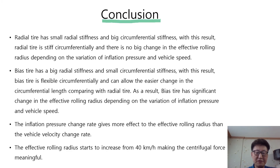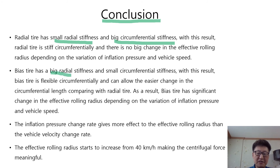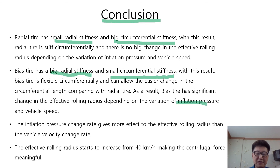Here is the conclusion for this video. Radial tire has small radial stiffness and big circumferential stiffness. With this result, radial tire is stiff circumferentially and there is no big change in the effective rolling radius depending on the variation of inflation pressure and vehicle speed. Bias tire has big radial stiffness and small circumferential stiffness. As a result, bias tire is flexible circumferentially and can allow easier change in circumferential length compared with radial tire, leading to significant change in the effective rolling radius.